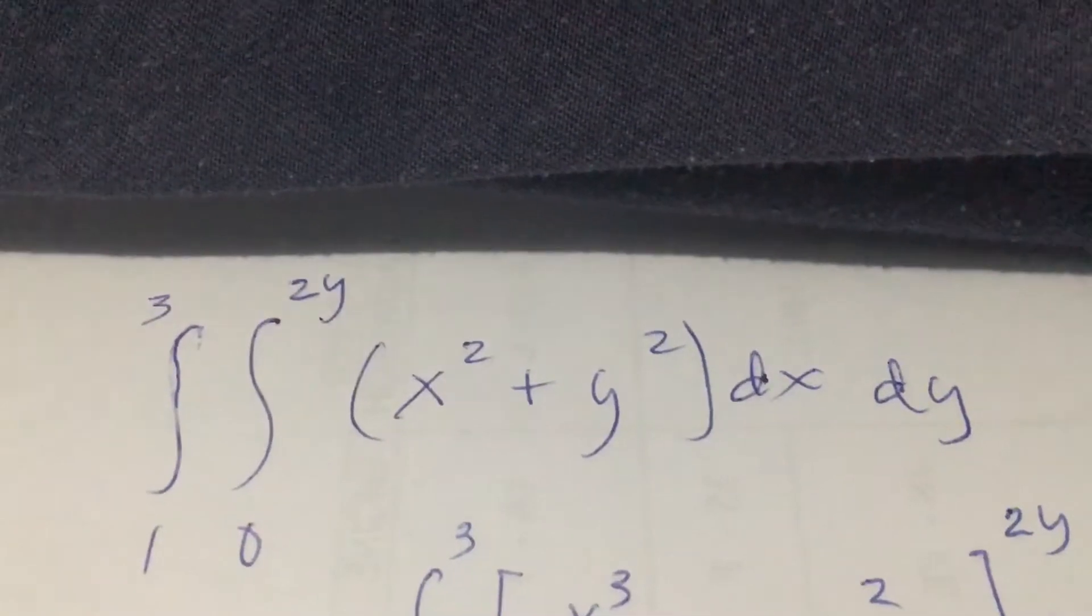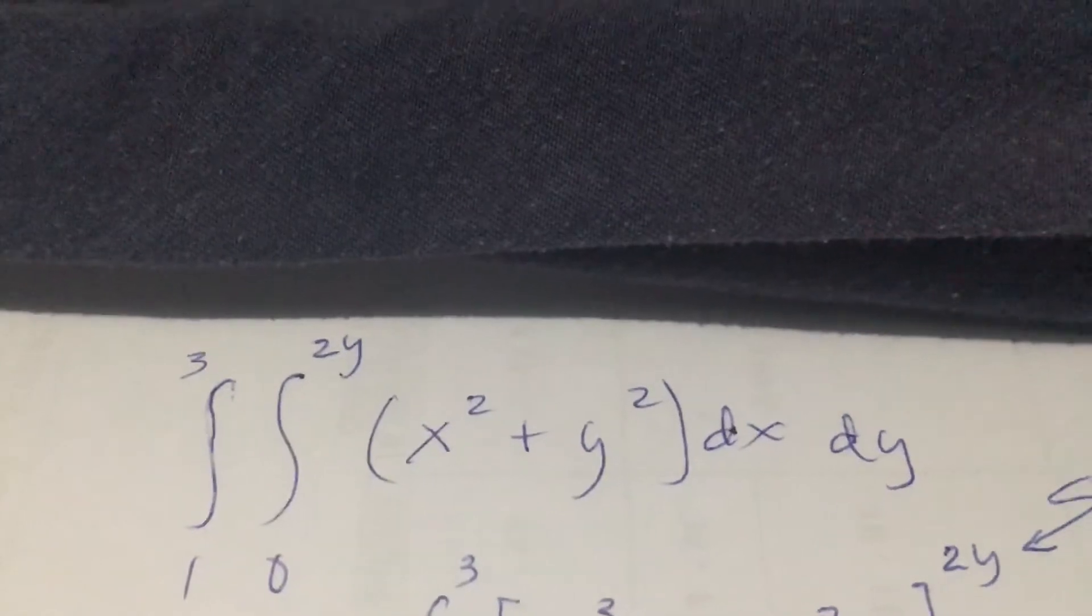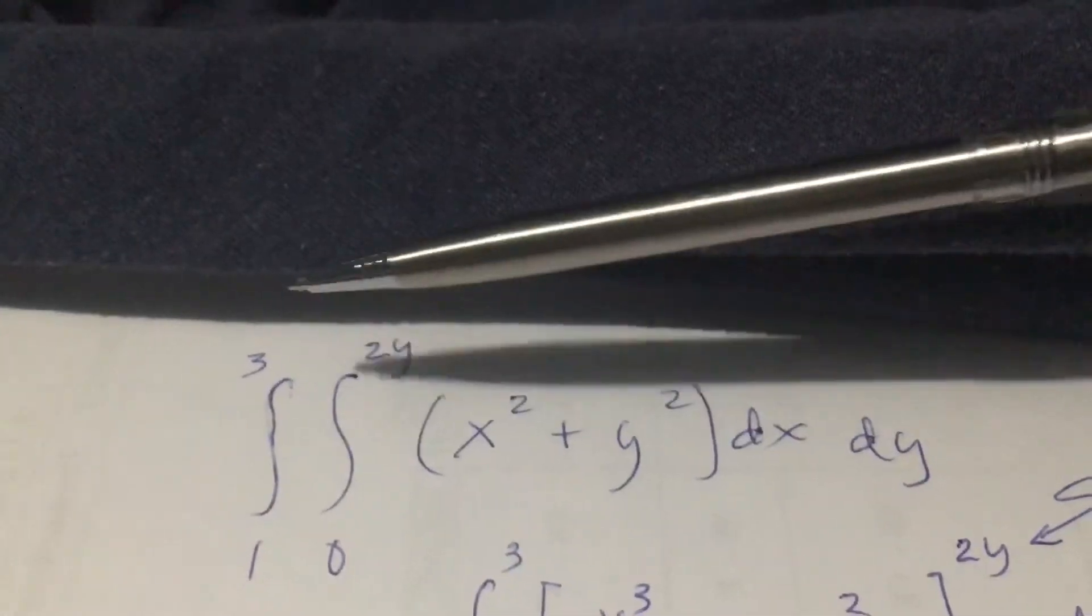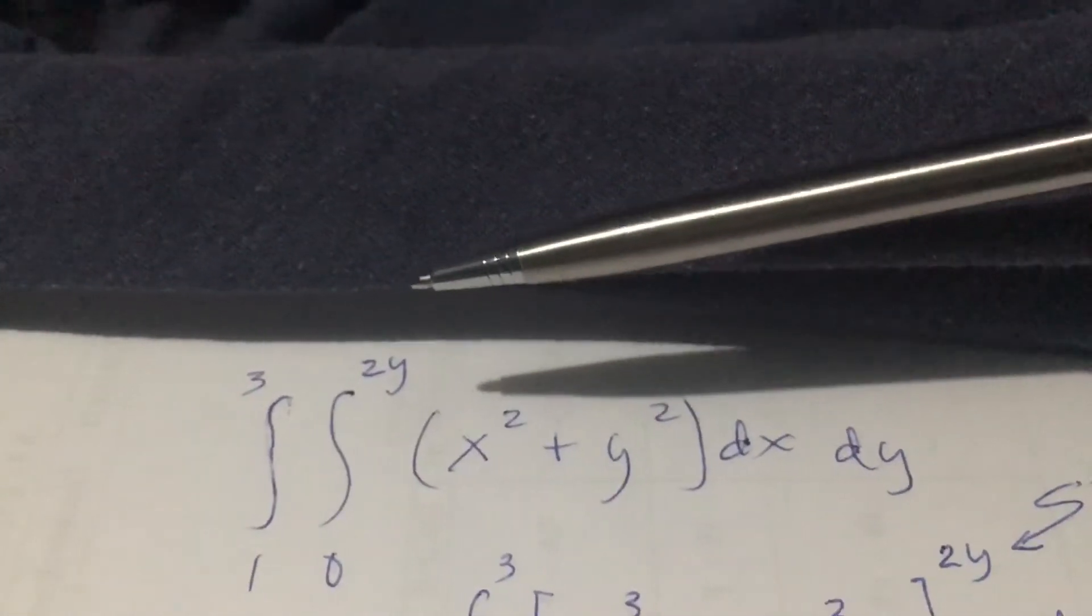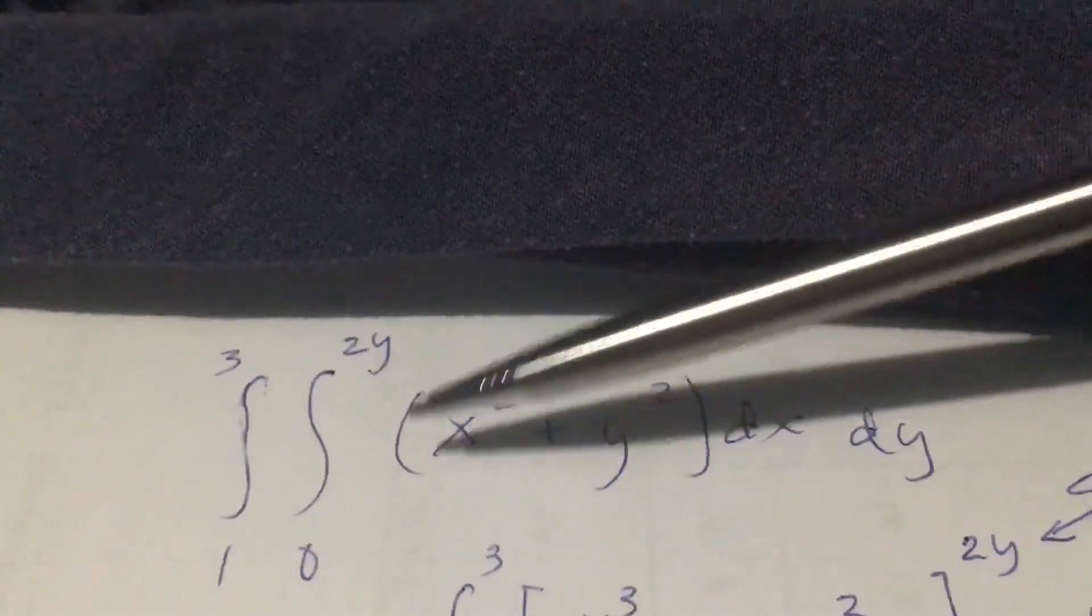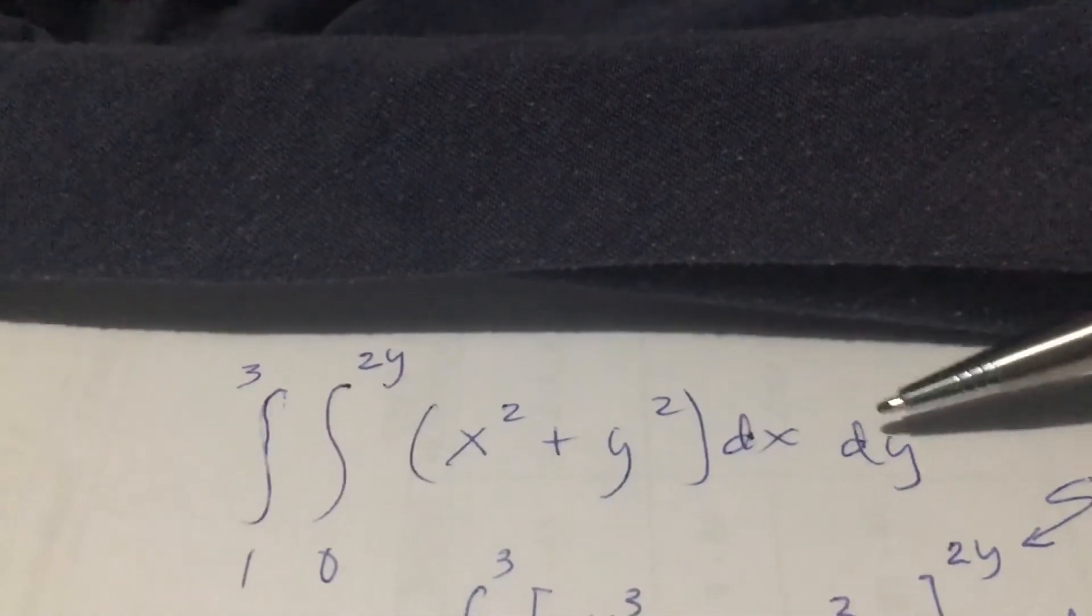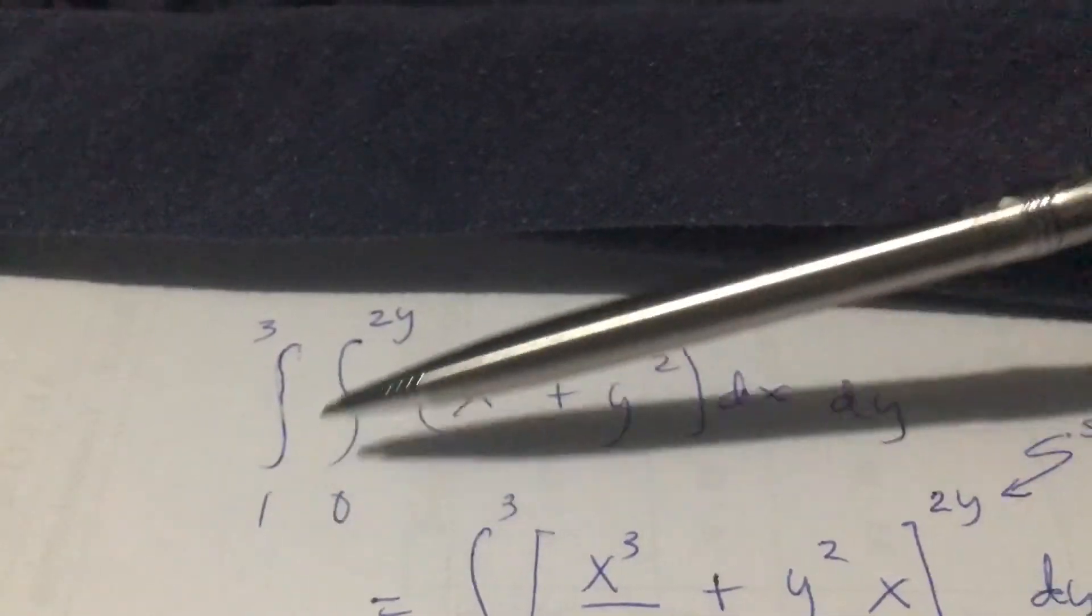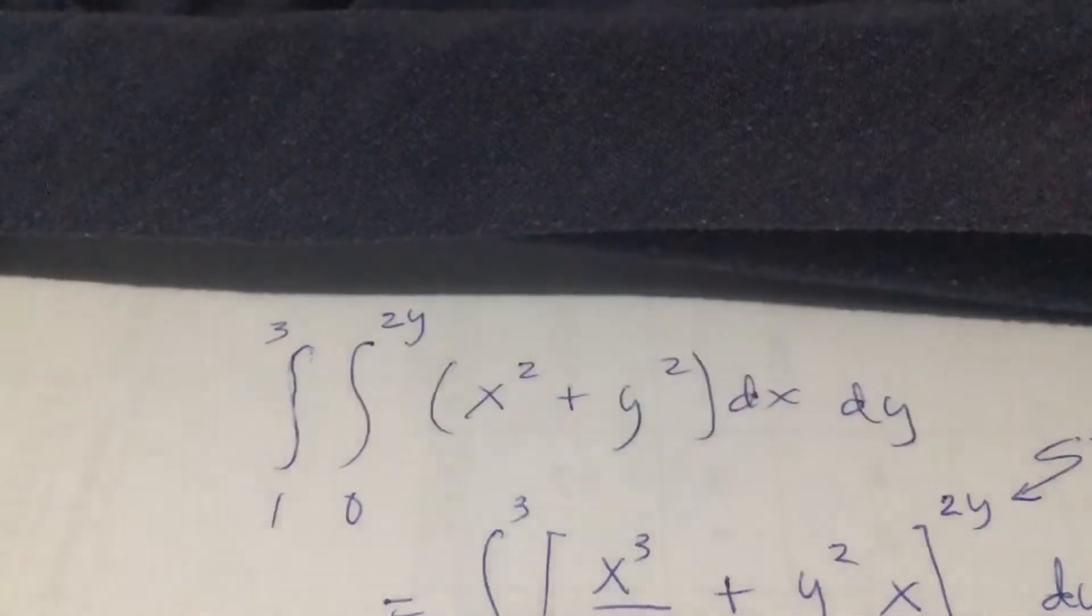In this video I'm going to show you how to evaluate this definite integral. When you say it is definite, it has upper and lower limits to it. In this case it has a double integral. We are going to evaluate a double integral problem: x squared plus y squared inside the parenthesis, dx dy, with the upper limit of 3, lower limit of 1. The other integral is 2y, lower limit is 0.